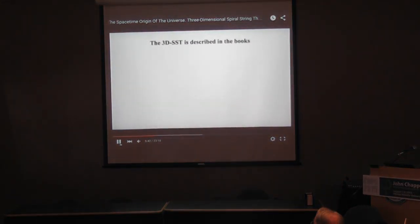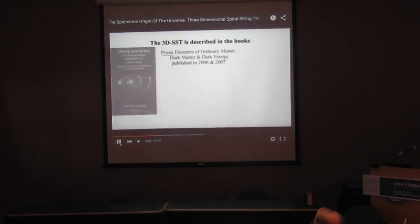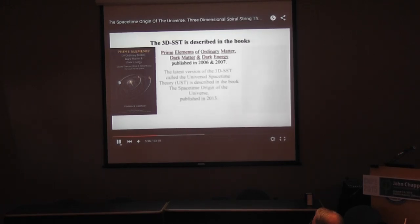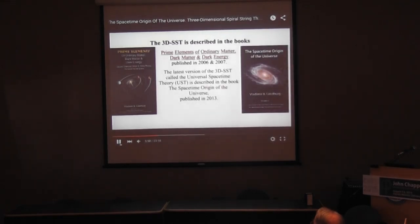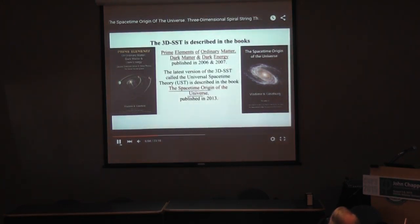The 3DSST is described in the books Prime Elements of Ordinary Matter, Dark Matter and Dark Energy, published in 2006 and 2007. The latest version of the 3DSST, called the Universal Spacetime Theory (UST), is described in the book The Spacetime Origin of the Universe, published in 2013. Below is a brief description of this theory.